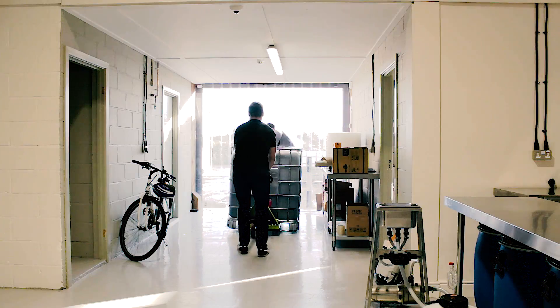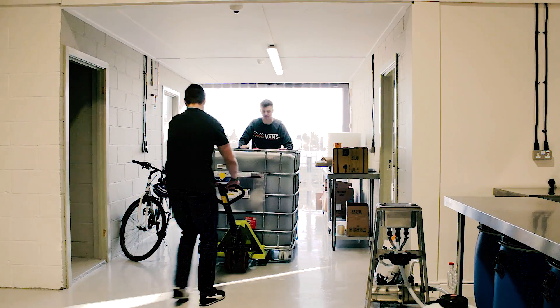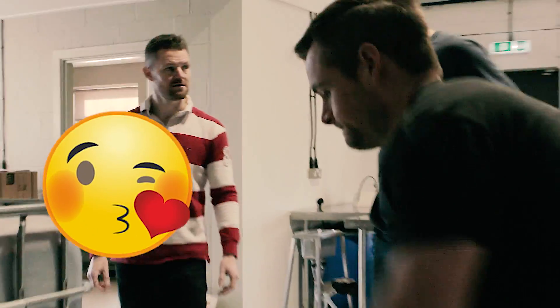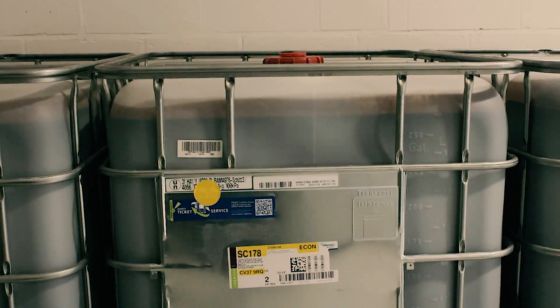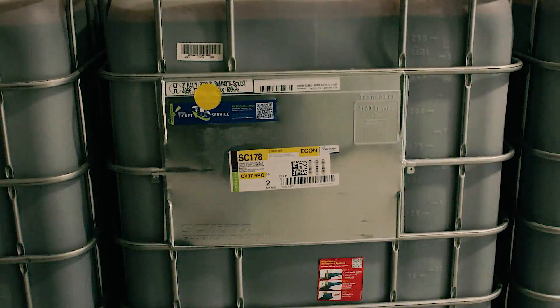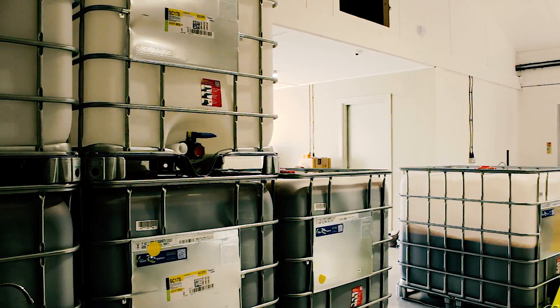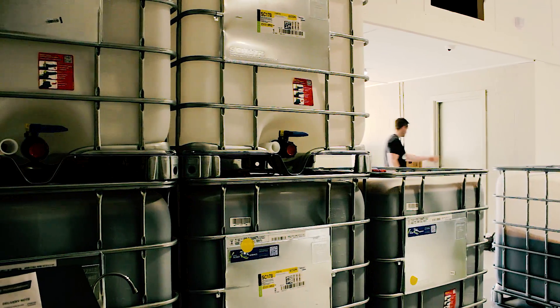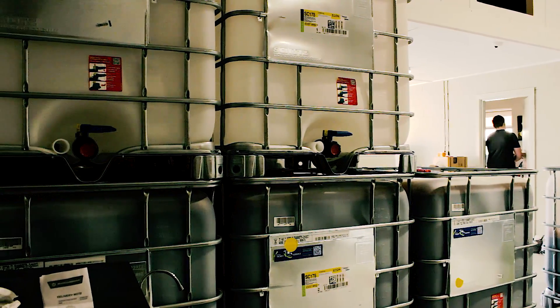Now we'll just wheel in our four IBCs full of molasses. Look at David flexing those biceps. The molasses is in, so we're going to go ahead and do some more small scale rum experiments with this molasses. Let me just take a sample of the molasses and we'll head off to the gin school room to play with it.